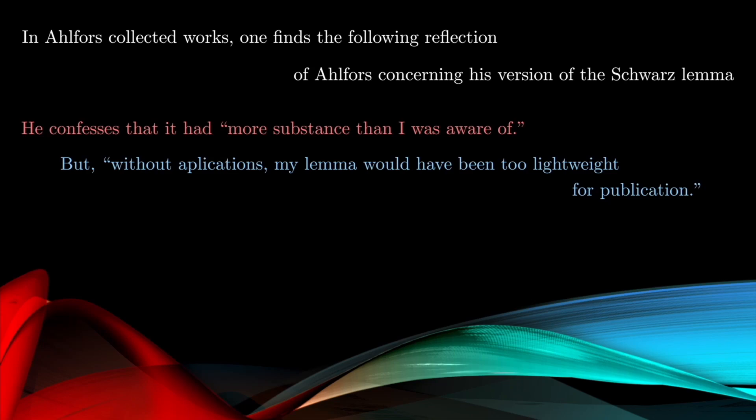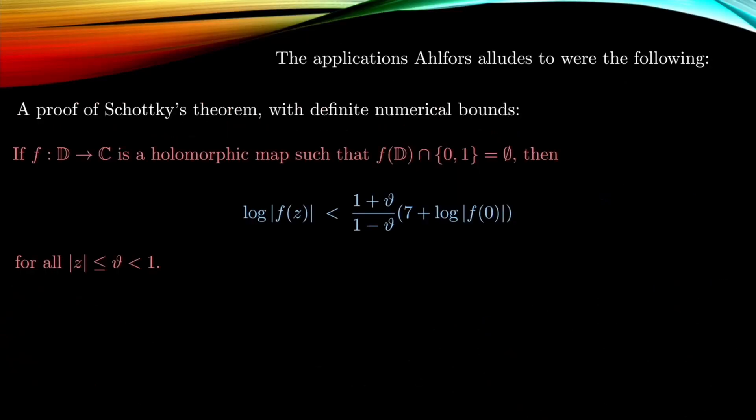Now, what applications is he referring to? Well, the first one is that he was able to give a proof of Schottky's theorem, which we stated earlier, but was actually able to give a definite numerical bound on it. Recall before that it was an implicit bound obtained by Schottky. And here we have that if f is a holomorphic map from the disk into the complex plane such that it omits the values 0 and 1, then the log of its absolute value is bounded by some constant θ which is less than 1, with a bound exactly here: 7 plus log of the absolute value of f at 0.